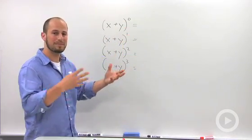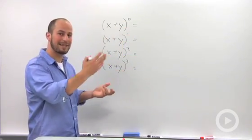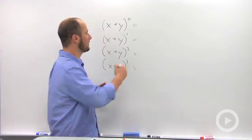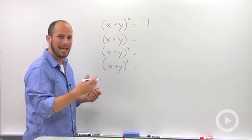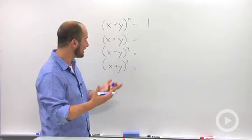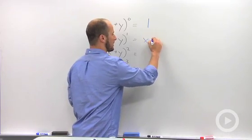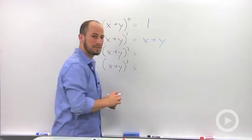So x plus y to the 0. x plus y is a number, to the 0, anything to the 0 is just 1. So this just gives us 1. x plus y to the 1st, anything to the 1st just stays as it is. So this just gives us x plus y.